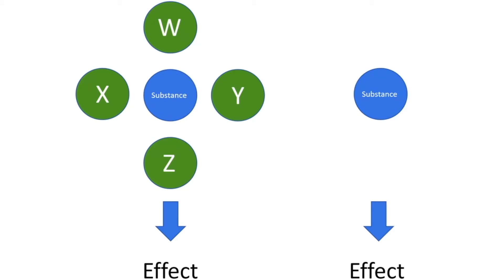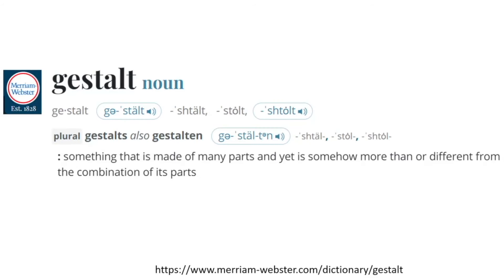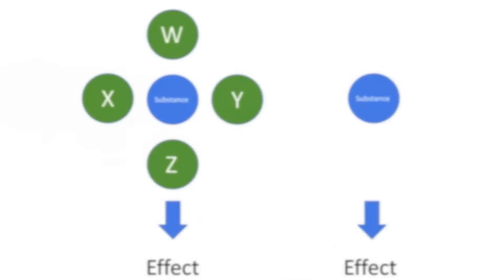The problem is the understanding that something is just the sum of all of its parts. That's not the case. There's a term for the opposite understanding of that, and that is the term gestalt. Gestalt is something that is made of many parts, something in nature, and yet is somehow more than or different from the combination of its parts.